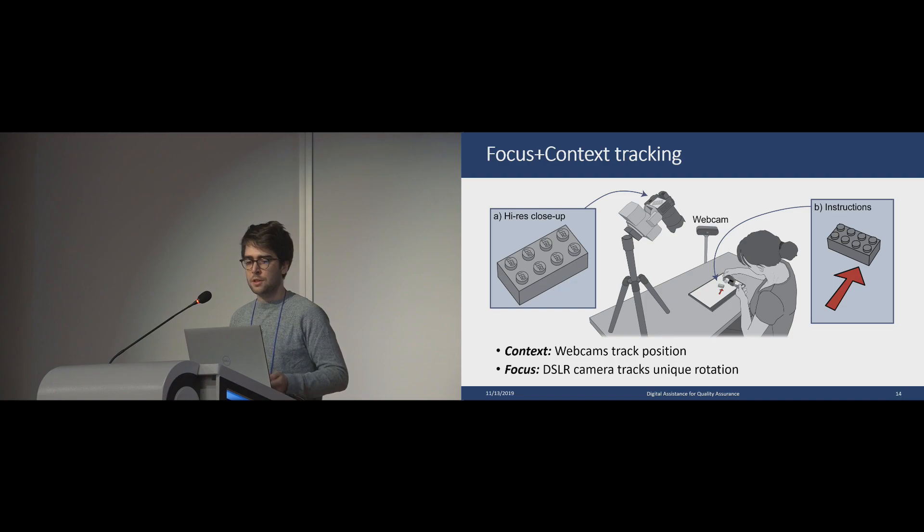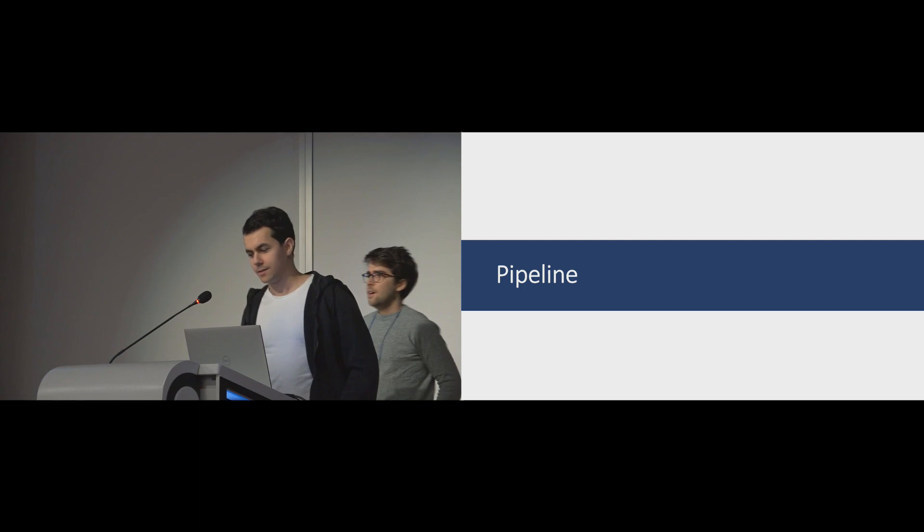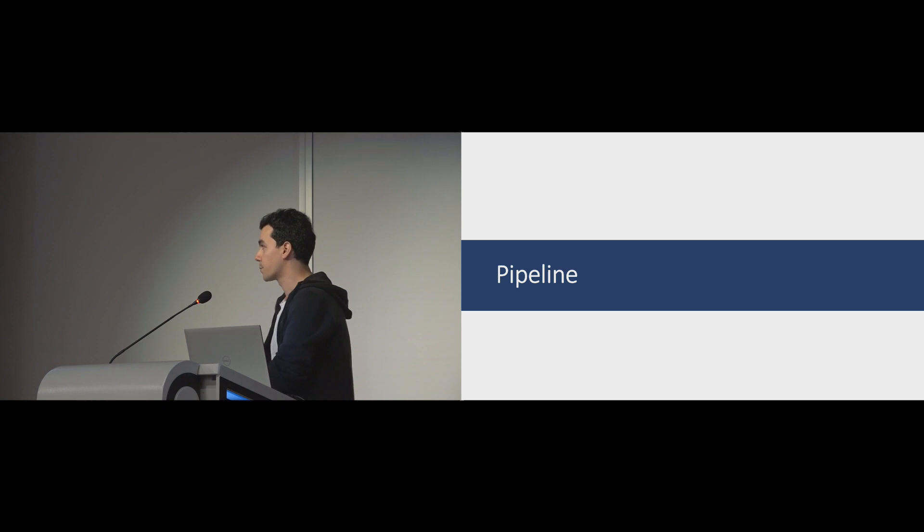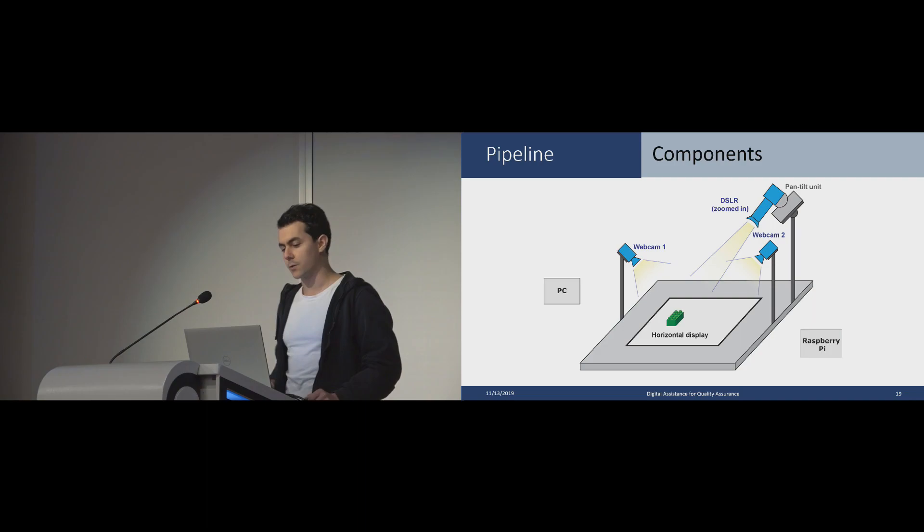Now Andreas will give you some details on the tracking pipeline. I'm going to talk a little bit about the overall pipeline, the hardware and software components and how they communicate with each other. These are the components we use: a PC, two webcams, a horizontal display, a DSLR camera, a panel unit, and a Raspberry Pi.